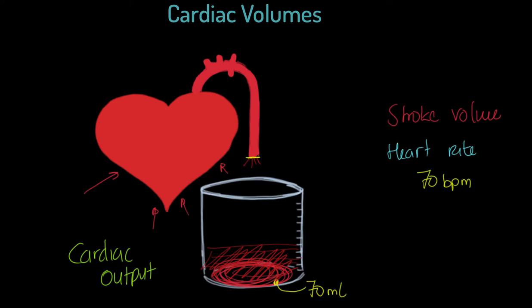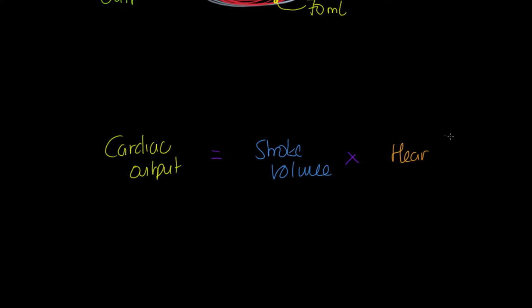I want to make absolutely sure you understand that cardiac output equals stroke volume times heart rate. Cardiac output is measured in liters per minute, stroke volume in milliliters or liters, and heart rate in beats per minute. What would the values be at rest?